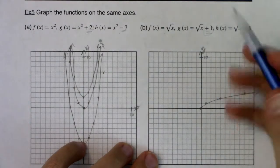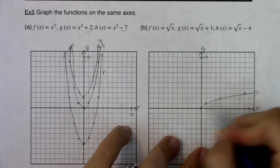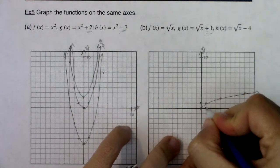So when I see that plus one, because it's positive, everything's going to be shifted up one unit. So I'm going to take this graph and I'm going to shift everything up one unit. So I'm going to go zero, one.